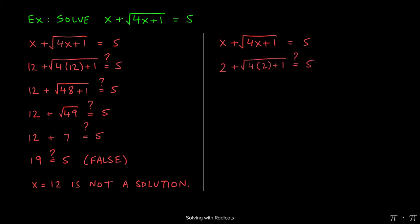Now on the right-hand side, we can do the same checks, but with the other potential solution, 2. So replacing all the x's with 2 yields 2 plus the square root of 4 times 2 plus 1. Again, we're trying to determine if this simplifies to 5.